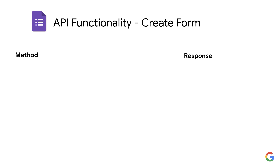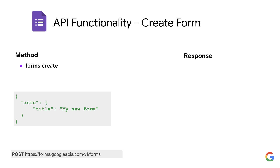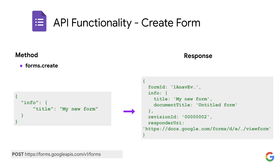Once you are set up to use the API in either a desktop or web configuration, you can use any of its nine API methods. The first method to try can be forms.create. It uses an HTTP POST with a JSON body where you can specify both the title and other form details. Upon successful creation of the new form, the response will contain details about the new form.